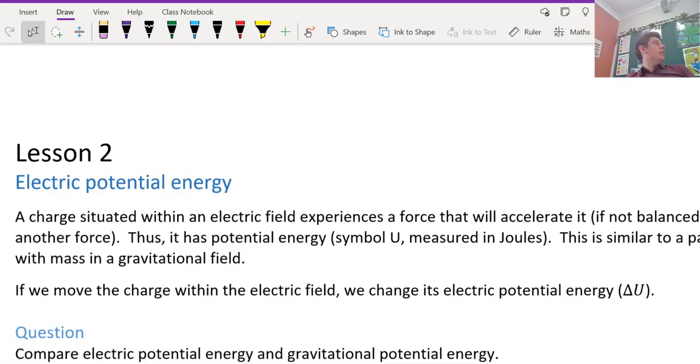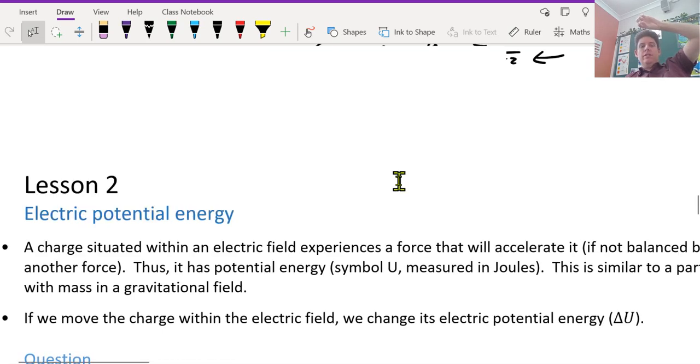Electric potential energy. If a charge is in a field, it experiences a force and has potential energy. This is similar to a mass in a gravitational field. Like we're currently in a gravitational field - if we get to a certain height, we will have potential energy because we've moved away from the earth.